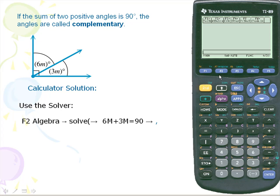we'll simply hit F2, which is the algebra section. Notice that the first option solve is highlighted. This is what we want. So we'll simply press enter.